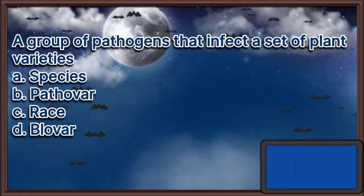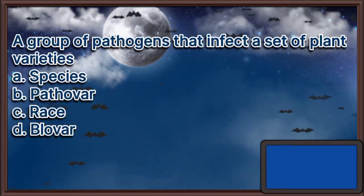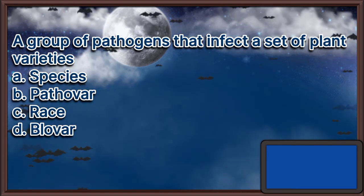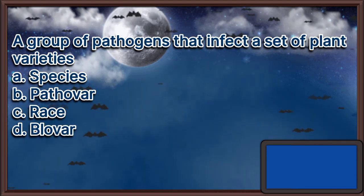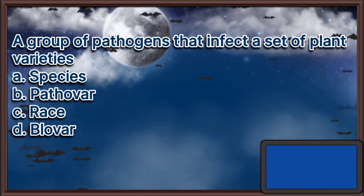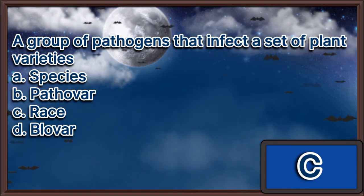A group of pathogens that infect a set of plant varieties. A. Species. B. Pathovar. C. Race. D. Biovar. The answer is letter C.